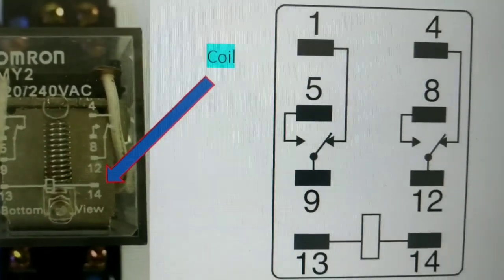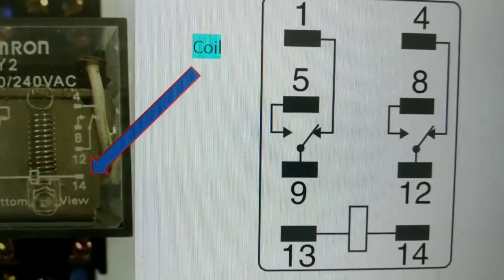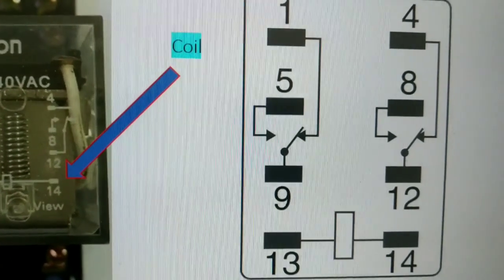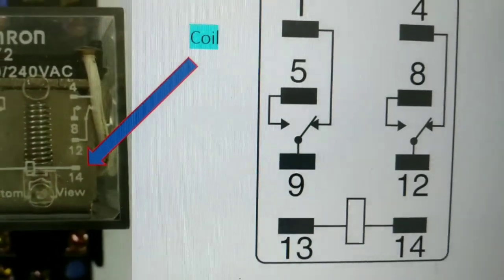The wire is normally closed in the second contact. Pin 1 to 4 is normally closed, pin 1 to 8 is normally open.